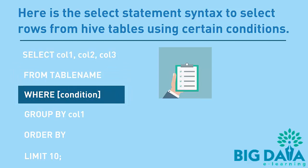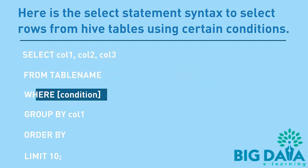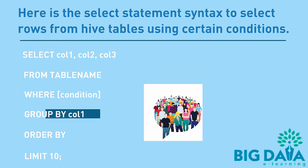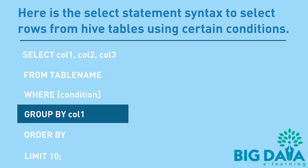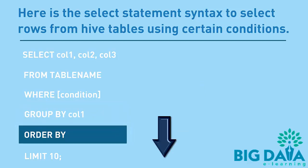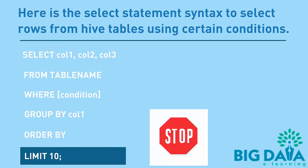Where is the condition part. We can specify the condition on which Select should retrieve the records. Group By is used if we need to group the records based on certain column value. Order By clause is used to sort the rows based on certain conditions. Limit is used to limit the number of records being fetched during every retrieval.